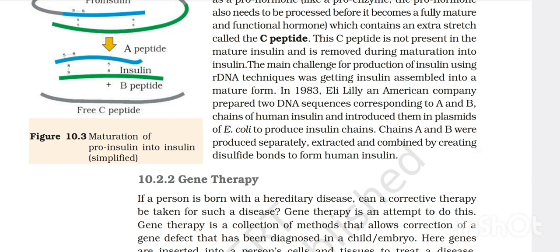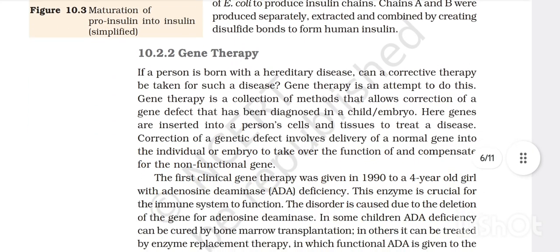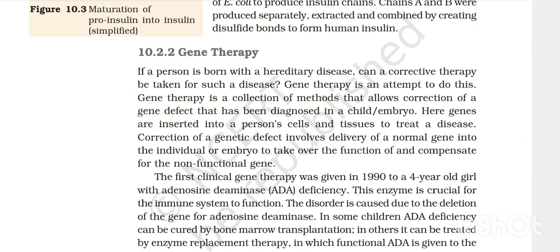In 1983, Eli Lilly, an American company, prepared two DNA sequences corresponding to the A and B chains of human insulin and introduced them into a plasmid of E. coli. Chain A and B were produced separately, extracted, and combined by creating disulfide bonds to form human insulin — produced using biotechnology.